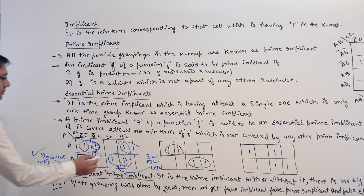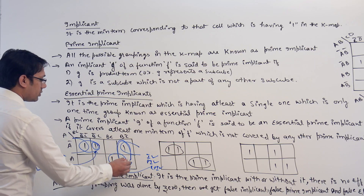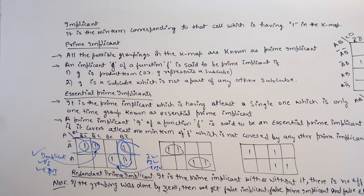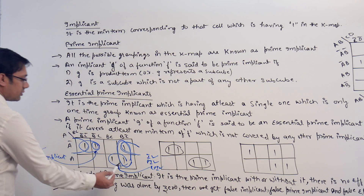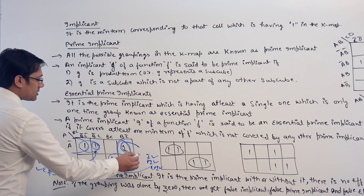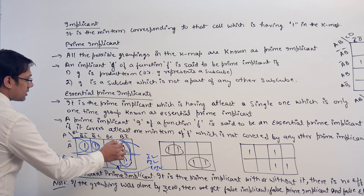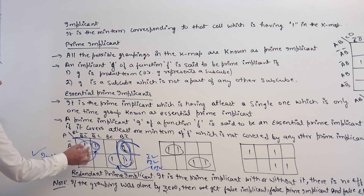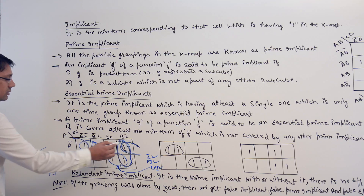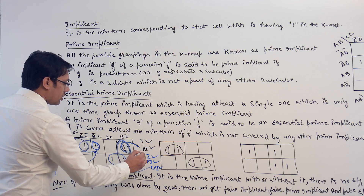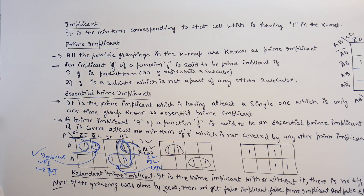But if you take this subcube and this subcube, they are not covering at least one one which is not covered by any other subcube. What I mean to say is, if you discuss about this one, that this one is already covered by this. If you discuss about this one, this one is covered by this as well as this one is also covered by this. So this subcube and this one are implicants and prime implicants, but they are not essential prime implicants, because they are not covering at least one one which is not covered by anything else.